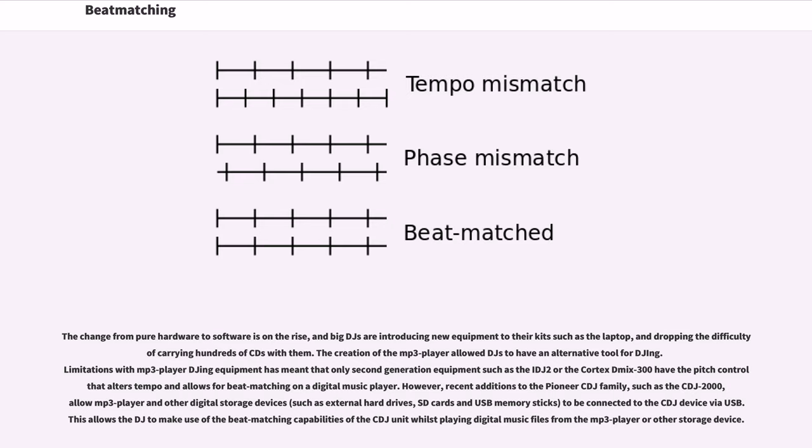However, recent additions to the Pioneer CDJ family, such as the CDJ-2000, allow MP3 players and other digital storage devices such as external hard drives, SD cards, and USB memory sticks to be connected to the CDJ device via USB.